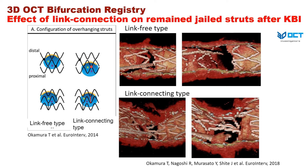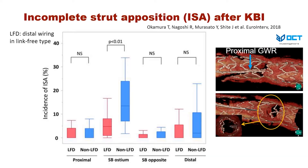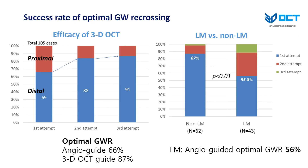We divided cases into the following patterns according to the existence of link connection at the carina: link-free and link-connecting type. Once distal guidewire re-crossing is achieved in the link-free type, wide side branch opening is achieved, while in the link-connecting type, jailing link and struts remain even after distal guidewire re-crossing and subsequent high-pressure kissing balloon inflation. We defined LFD type as distal wiring in link-free type and investigated incomplete strut apposition. LFD type resulted in less incomplete strut apposition at the side branch OCT compared to non-LFD type.